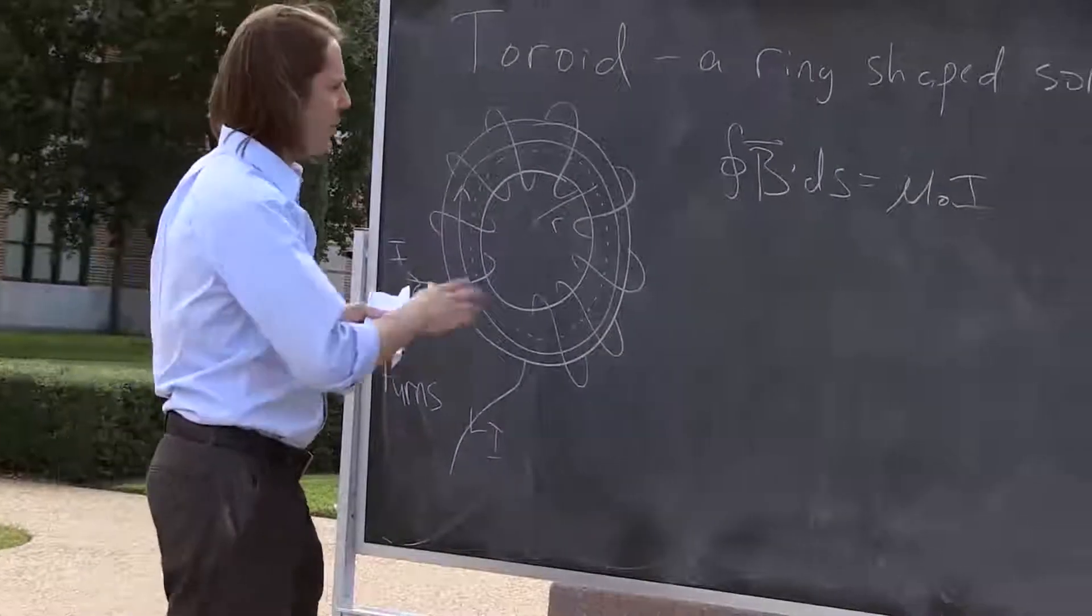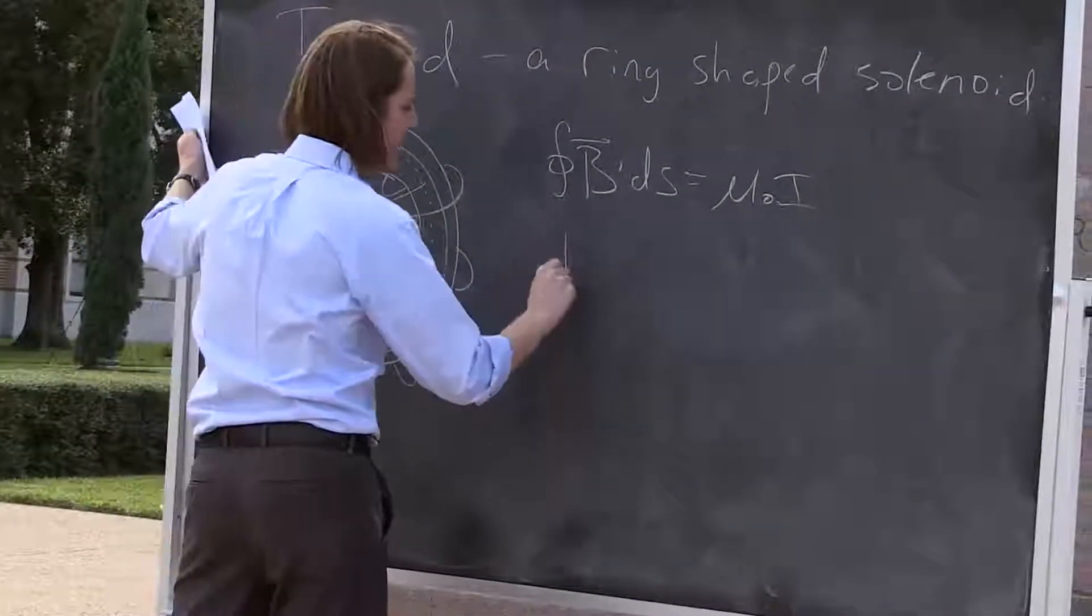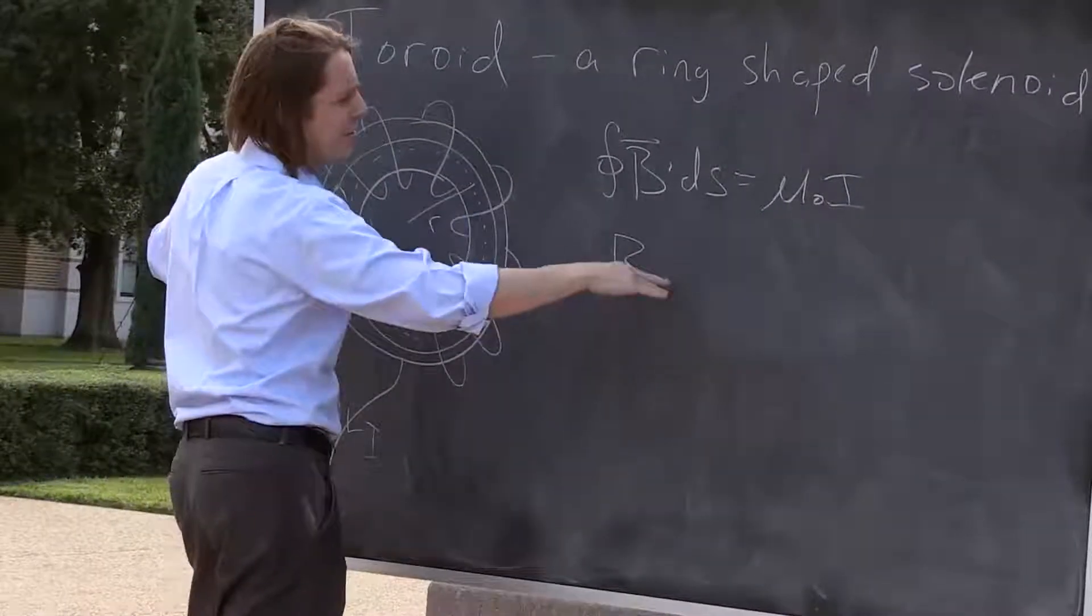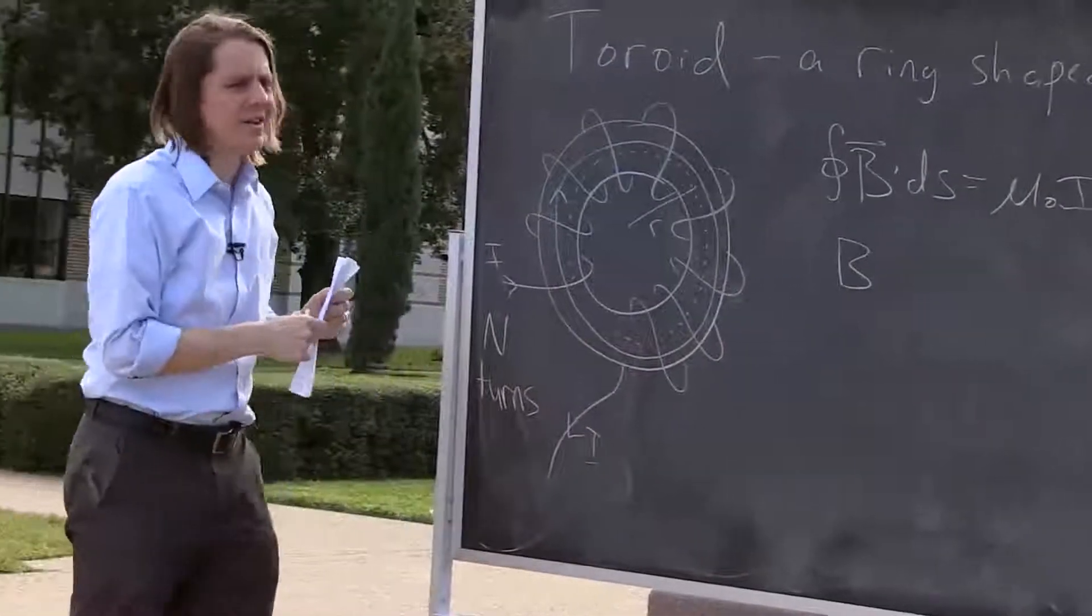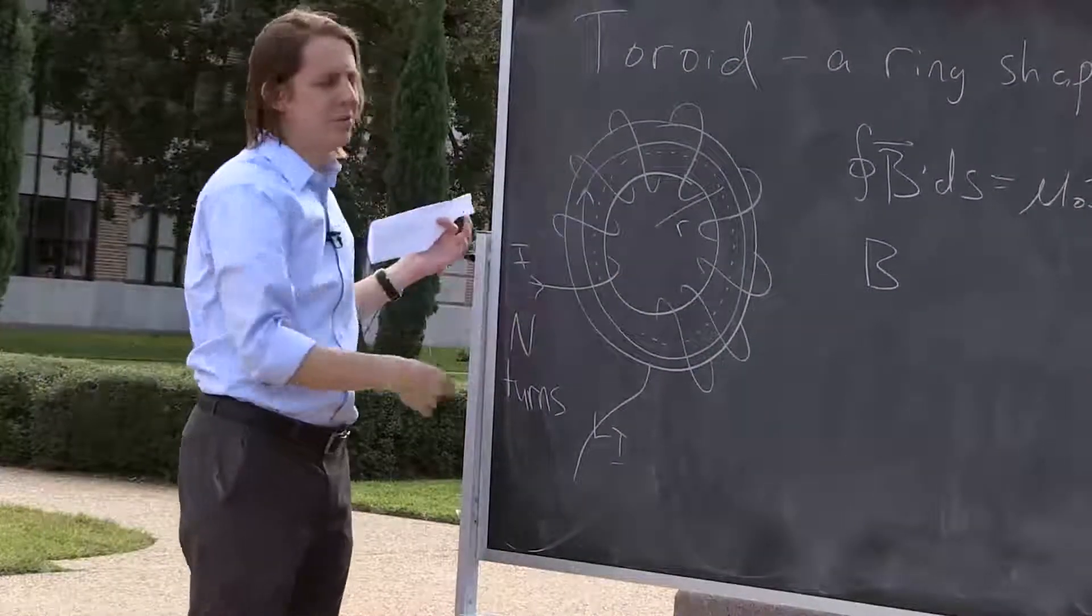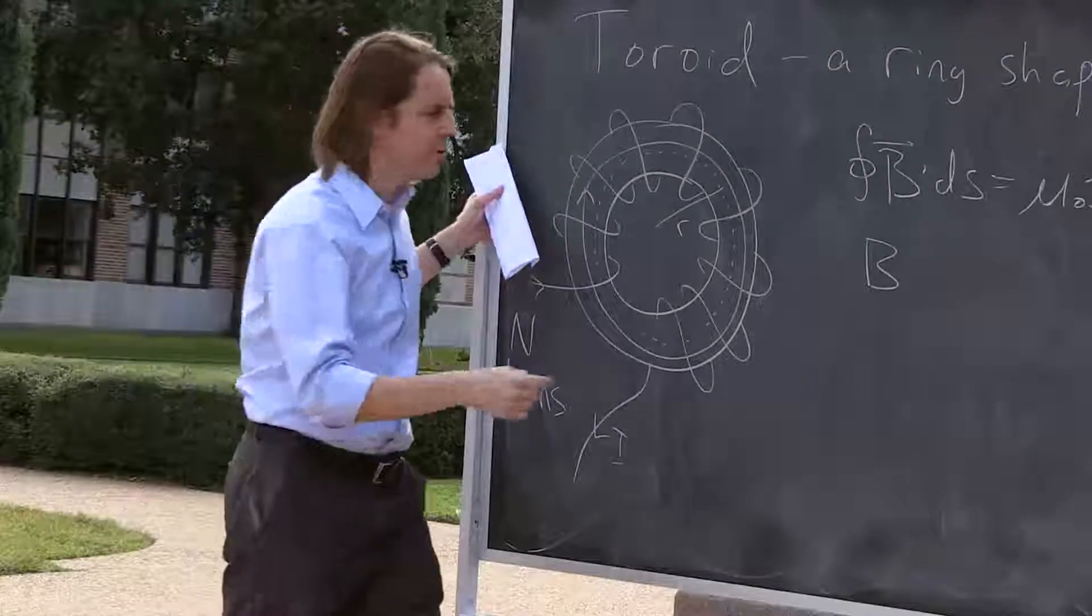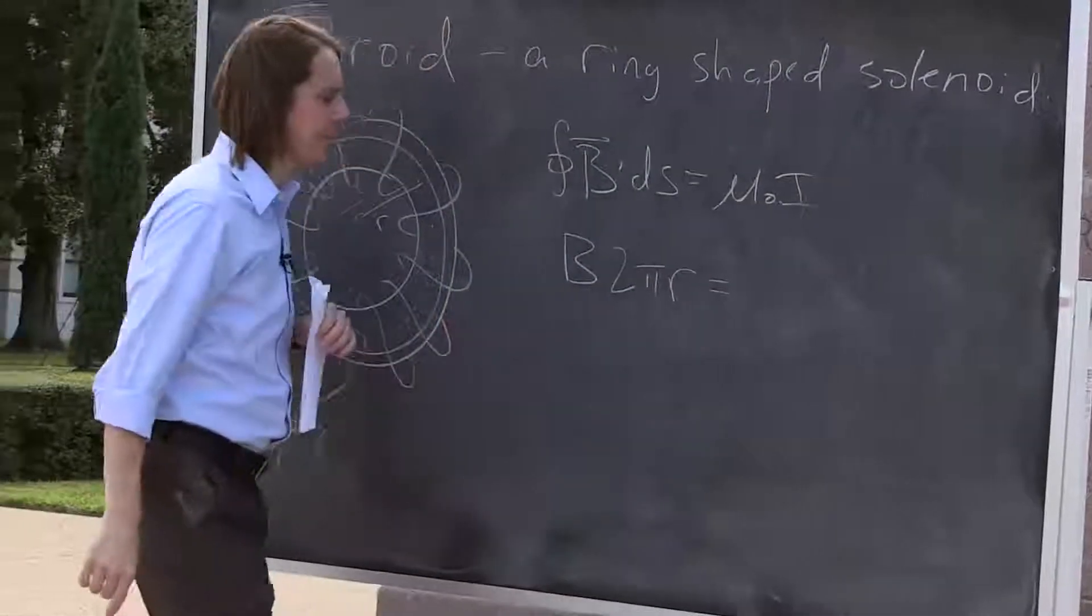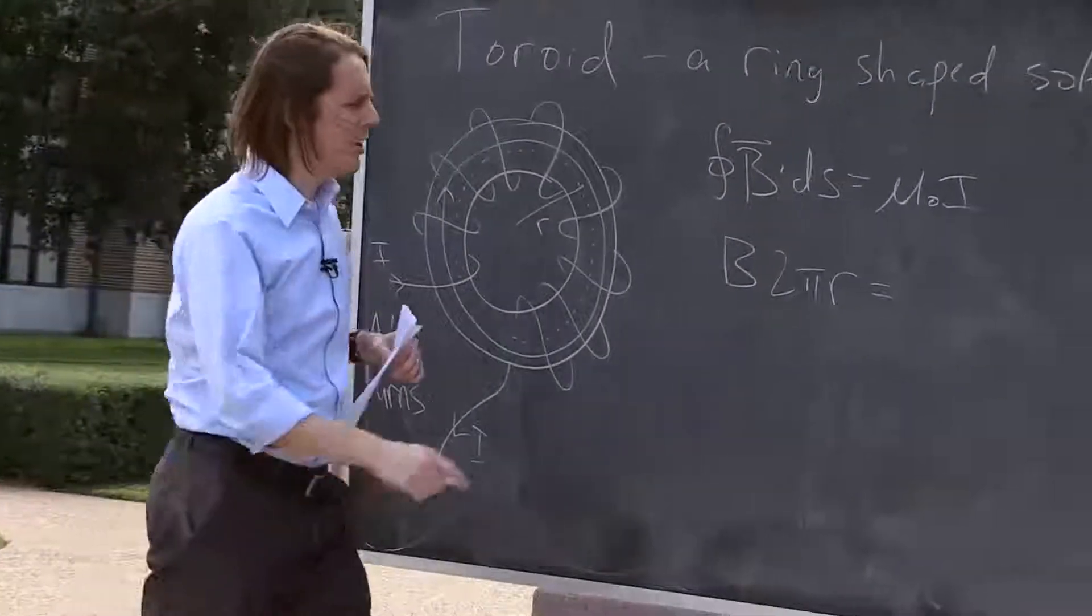So let's see what we get. So we assume there must be some B field that's constant. We know it's always along ds, so that takes the dot product out of the integral. It's really just the integral of ds. The integral of ds around the loop is just the circumference, so it's B times 2πr. B times 2πr equals μ₀.